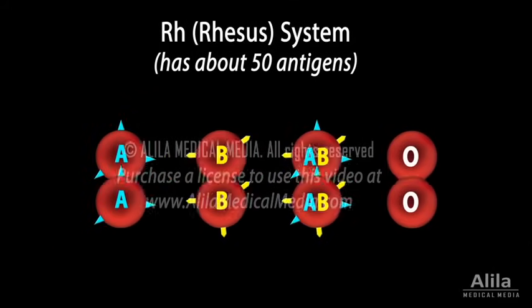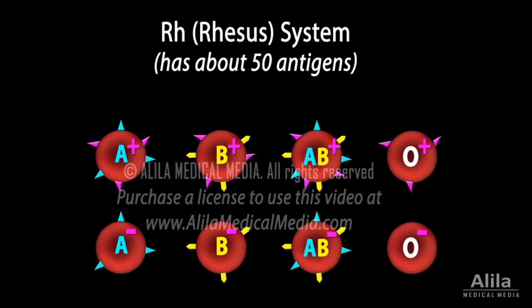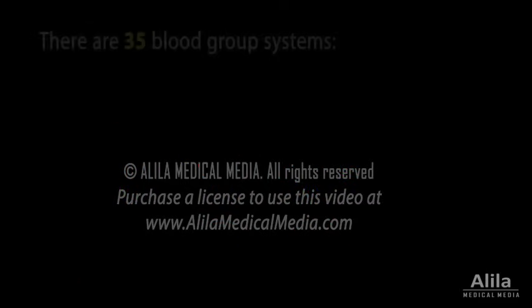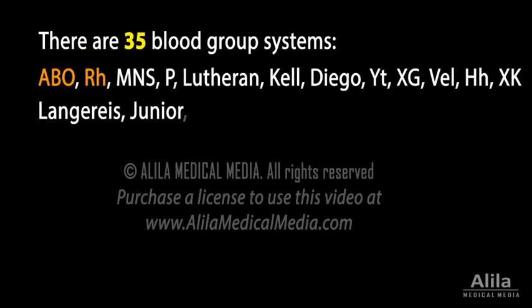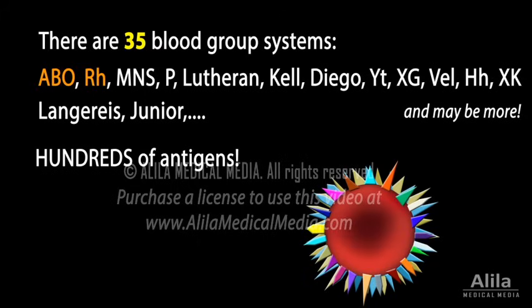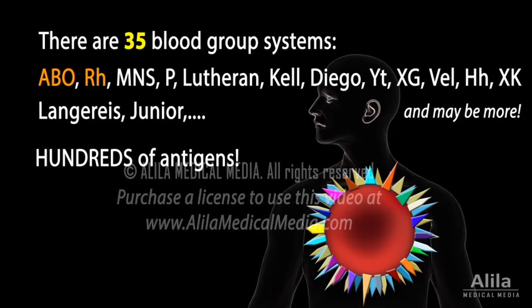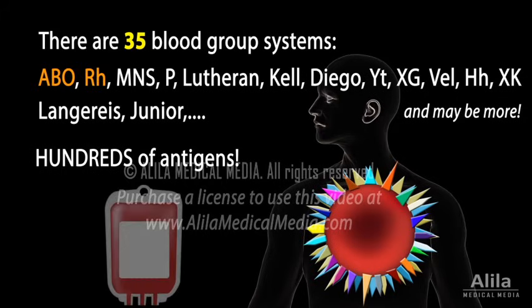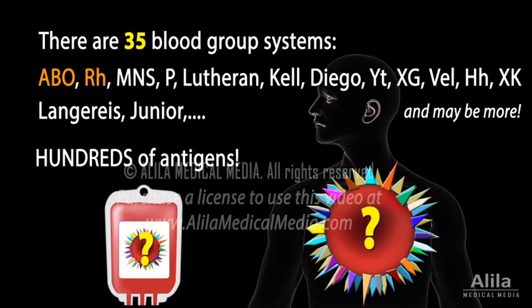Each of the four types of the ABO system can be Rh positive or negative, giving eight possible combinations — the eight basic blood types everyone knows about. But ABO and Rh are only a fraction of the 35 currently known blood group systems, many of which can cause serious reactions during transfusion if mismatched. Altogether, there are hundreds of antigens, giving rise to a gigantic number of possible blood types. A fully specified blood type should describe the complete set of antigens that a person has, and in theory this list must be determined for both donor and recipient before a transfusion can take place.